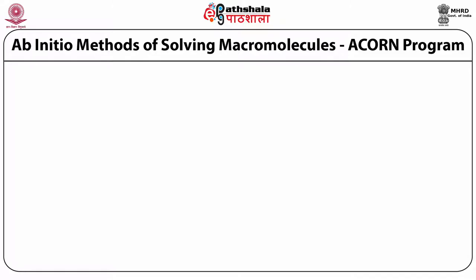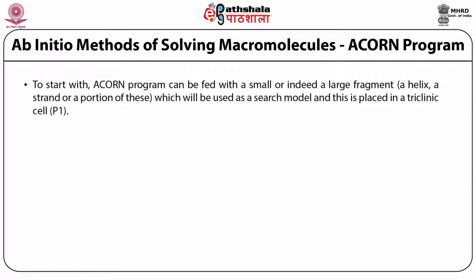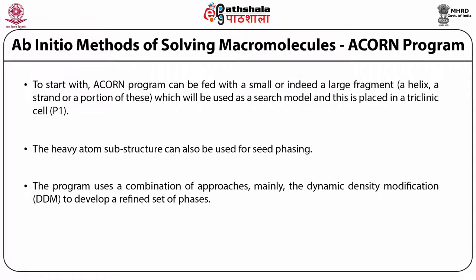To start with, the ACON program can be fed with a small or indeed a large fragment. When it is a fragment, it can be a helix, strand, or a portion of these, which will be used as a search model and placed in a triclinic cell in P1 space group. The heavy atom substructure can also be used for seed phasing. The program uses a combination of approaches, mainly dynamic density modification (DDM), to develop a refined set of phases. The correlation factor is used as a criterion of phasing quality.